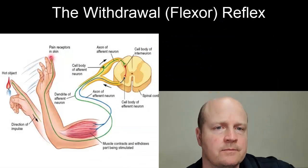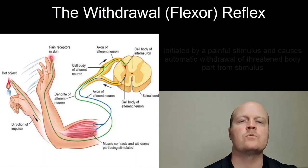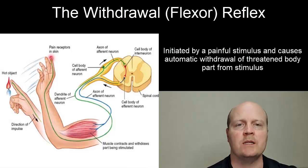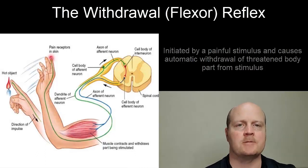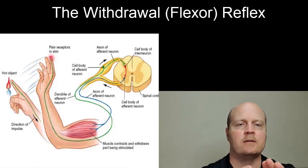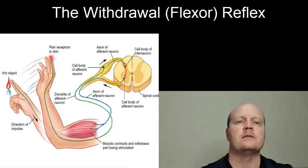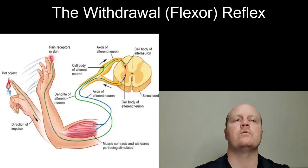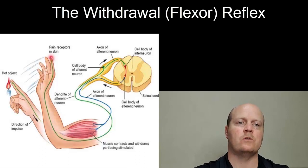The last reflex we'll talk about is the flexor or withdrawal reflex. This one is initiated by a painful stimulus, which causes the automatic withdrawal of that threatened body part from the stimulus. The sensory receptor in my hand senses pain or excess heat, then a sensory neuron conducts that afferent message to the spinal cord integration center, where we get an interneuron that synapses onto the motor neuron.